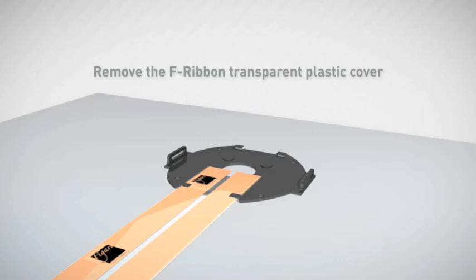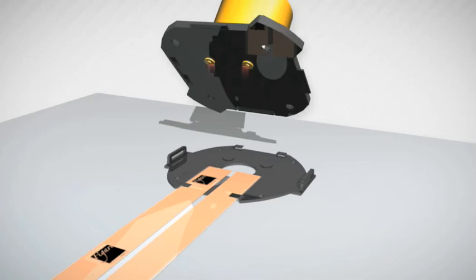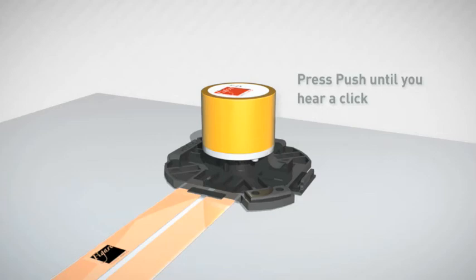Do not cut all the F-ribbon. Take the F-25. Check that the two metallic pins under the F-25 will be above the peel off made on the F-ribbon. Insert the F-25 on the bass rigid fin and press push until you hear a click.